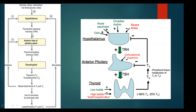In summary, thyrotropin-releasing hormone activates the pituitary gland, which stimulates TSH production, which activates the thyroid gland to produce T4 and T3. If blood levels of T3 and T4 rise, there is feedback inhibition on the pituitary and hypothalamus. If hormone levels are lowered, it has a stimulatory effect on the hypothalamus.